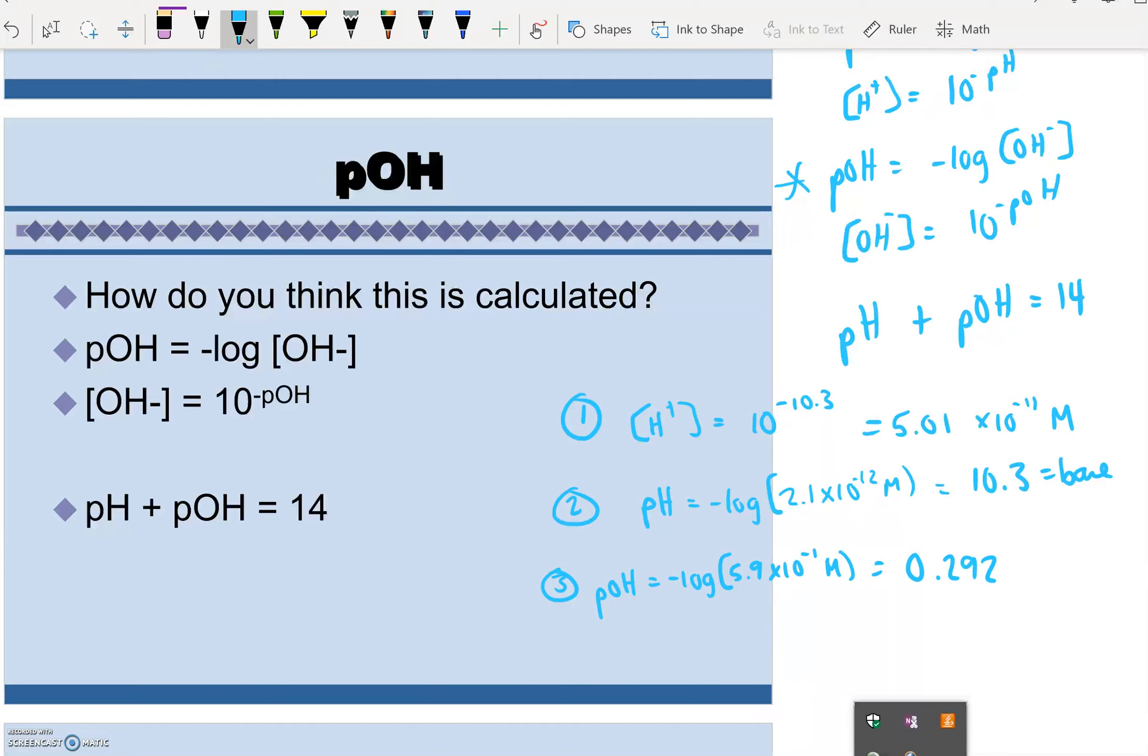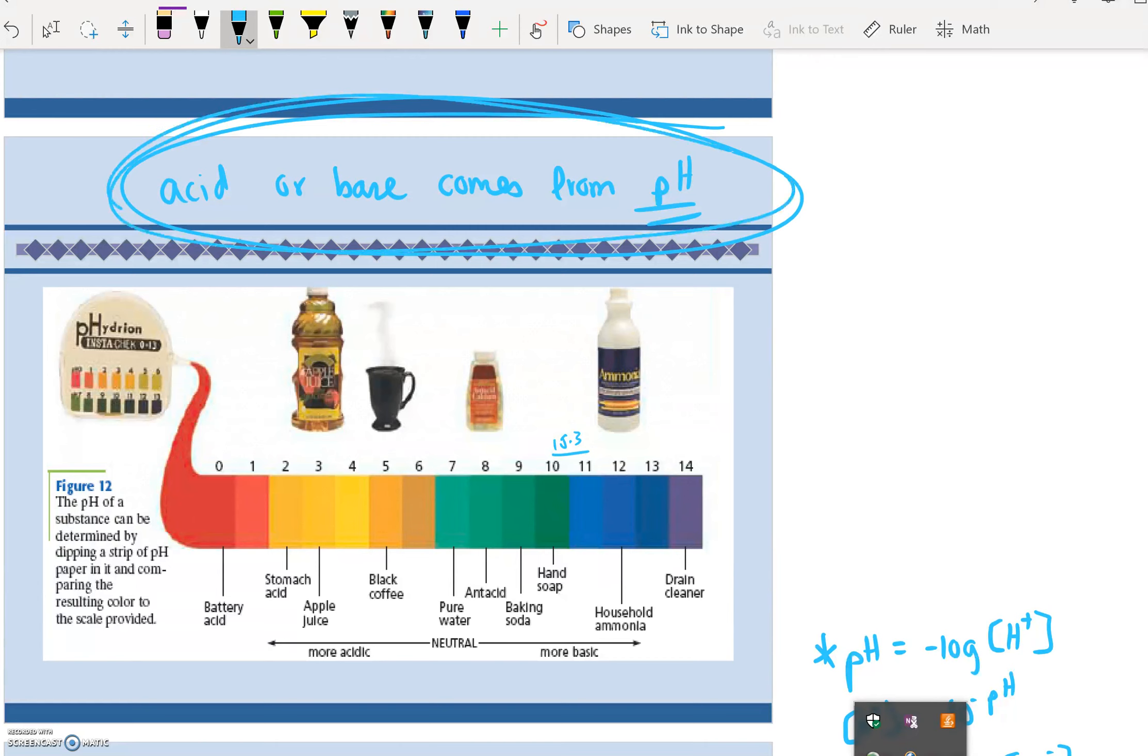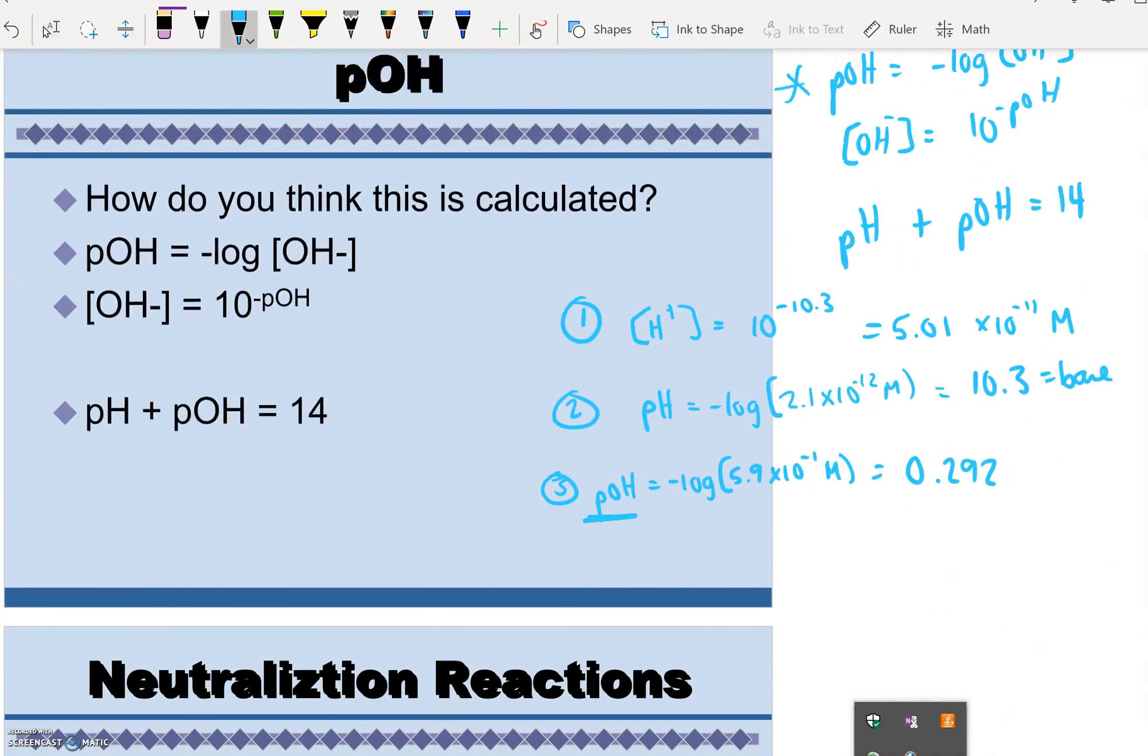Now, the next question says, is it acidic, basic, or neutral? As we said up above, we can only tell if a substance is an acid or a base if we know the pH. We calculated pOH. That is not the same thing. Luckily, I have a relationship that says pH plus pOH equals 14. So pH plus 0.292 equals 14. So that means to solve for my pH, I'm going to subtract 14 minus my pOH, and that gives me 13.7. pH of 13.7 is a base.